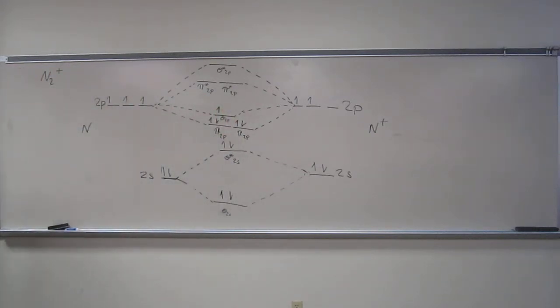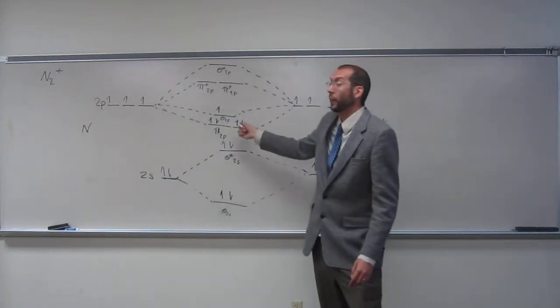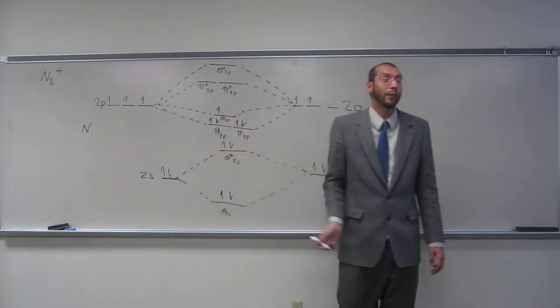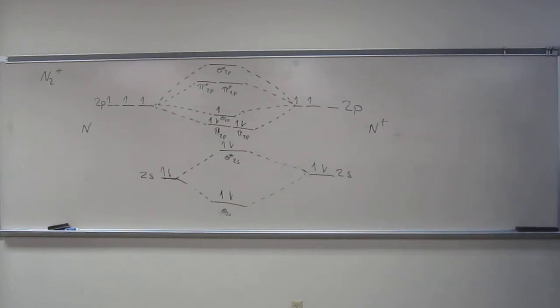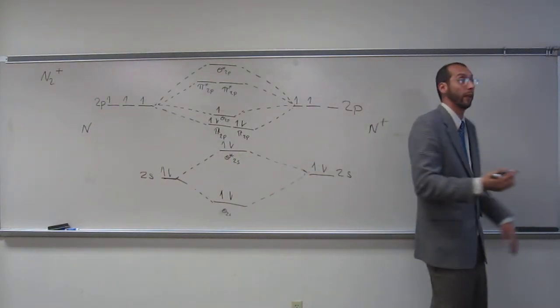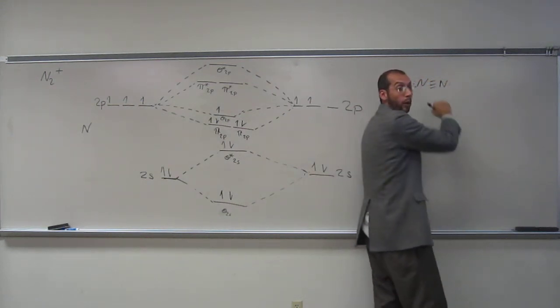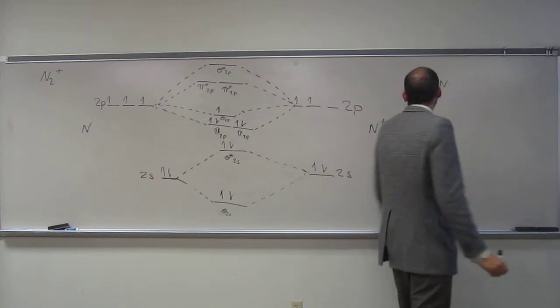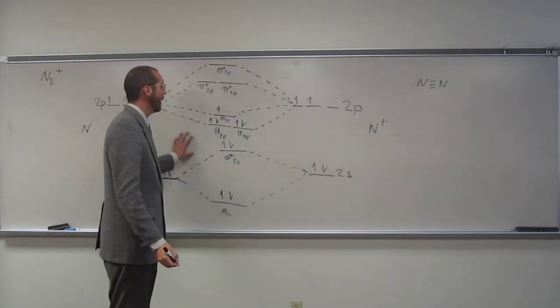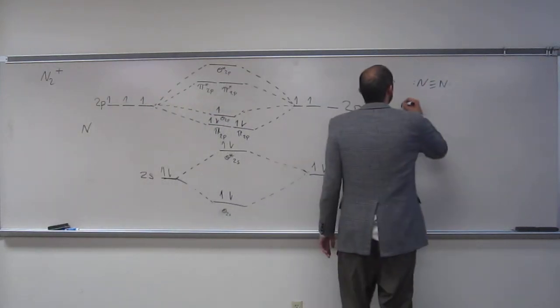Remember, what did we say we expected the bond order to be? Three. Well, one-half less than three, right? Which would be two-and-a-half. If you look at this, already you should be able to tell it's going to be two-and-a-half. So let's go ahead. How do we know three to start off with? Because from VSEPR theory we said when we build nitrogen in VSEPR theory it looks like that. So that's a bond order. So now let's do the bond order first.